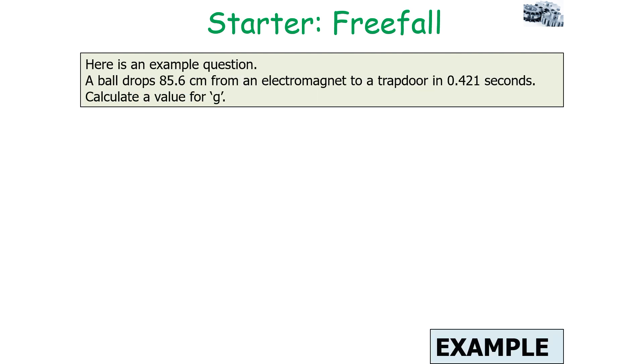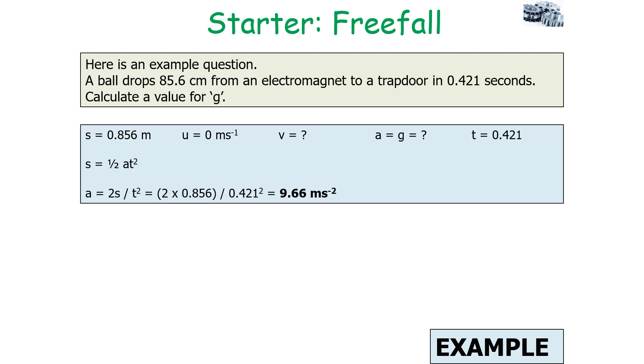Let's now look at an example question regarding an object undergoing freefall. A ball drops 85.6 centimeters from an electromagnet to a trapdoor in 0.421 seconds. Calculate a value for g. You would write out s, u, v, a, and t (suvat) and pop in the numbers. So s = 0.856 meters, u = 0, a = g (but we don't know the value of g), and t = 0.421 seconds. Note we've converted centimeters into meters.